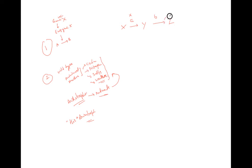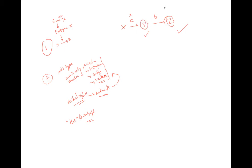If there is a mutation in enzyme A, the final product Z will not form, so the organism will not survive unless we provide Z. However, it will also survive if we provide Y directly, because the role of enzyme A is to transform X into Y — so bypassing that step by supplying Y allows growth.